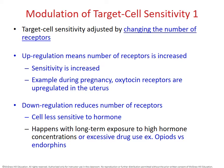When someone stops taking opioids, they experience extreme withdrawal symptoms because the body does not have enough receptors to naturally regulate its endorphin cycle. This is why many medications are offered when patients try to detox — to give the body time to return to a normal number of endorphin receptors so patients do not feel horrible during withdrawal.